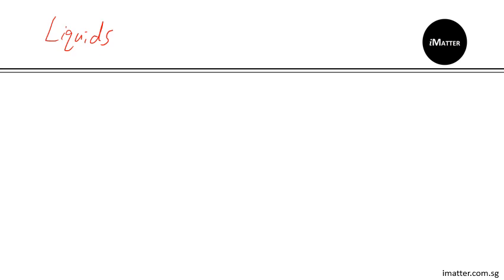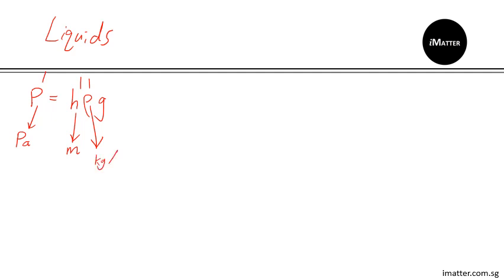Liquids is a very common topic that you will probably be asked about in your questions, and there is only one formula to actually remember: pressure equals h rho g. Let me remind you about the units — pressure is always in Pascal as the SI unit, height in meters, and for density this is where some students get it wrong — the SI unit for density is kilogram per cubic meter rather than grams per cubic centimeters. g will be the gravitational field strength; for all levels you are supposed to use the value of 10 newtons per kg.